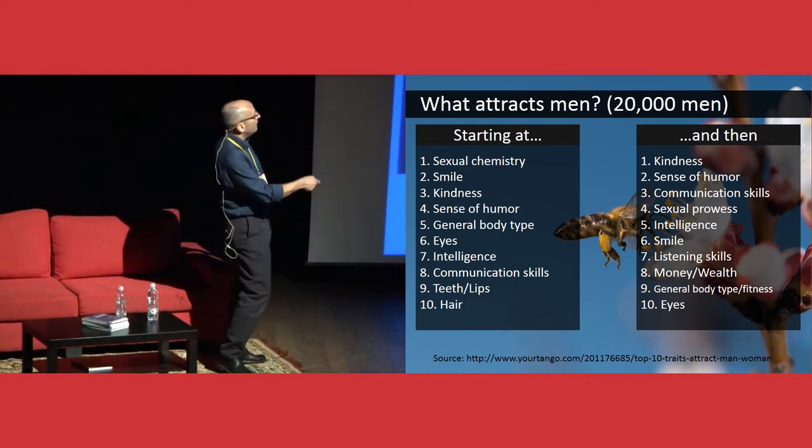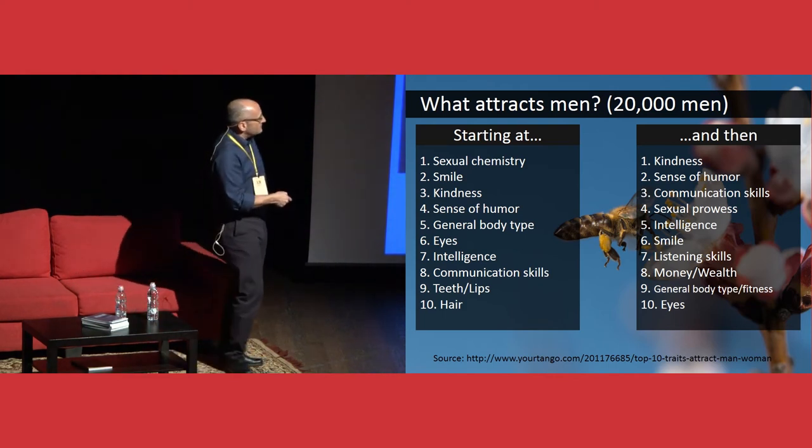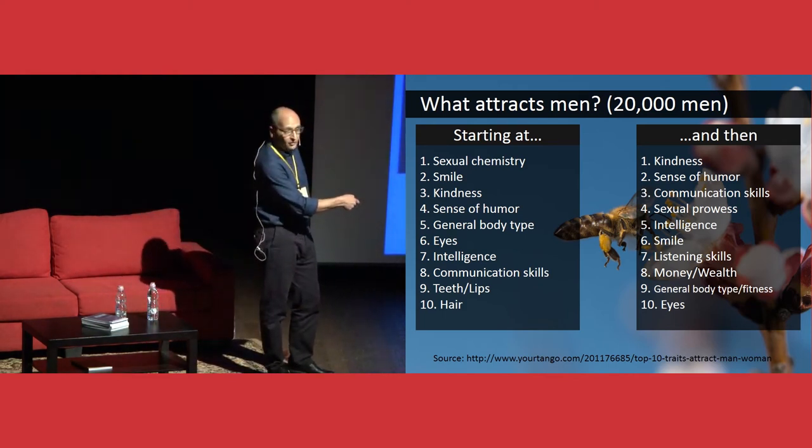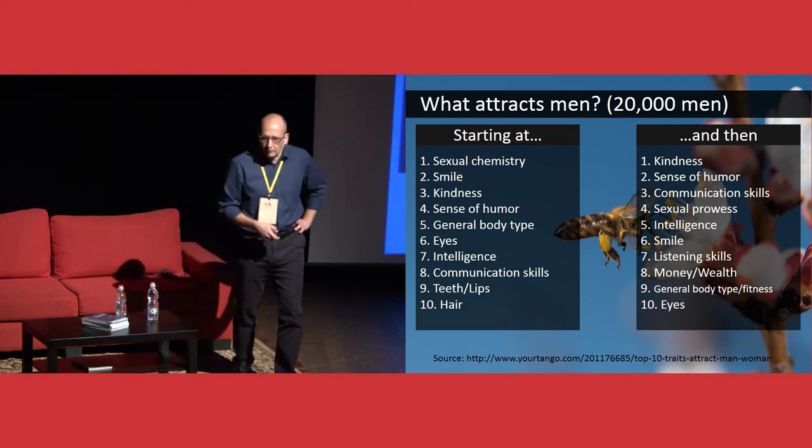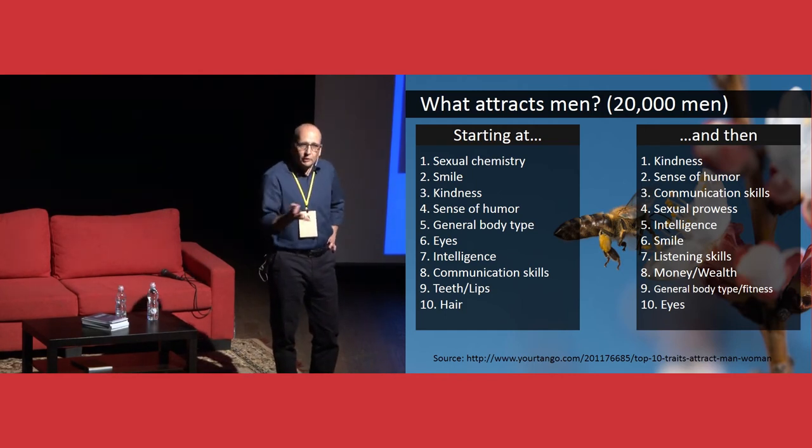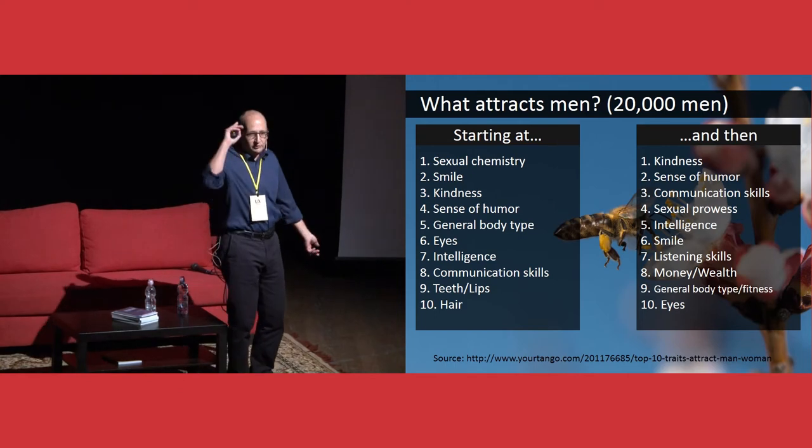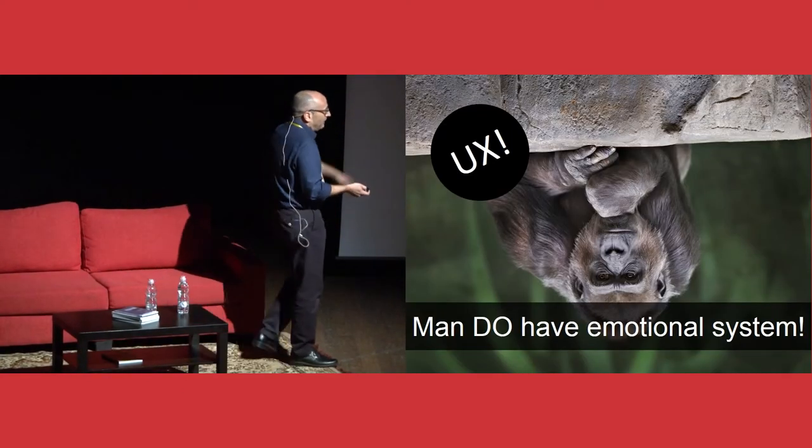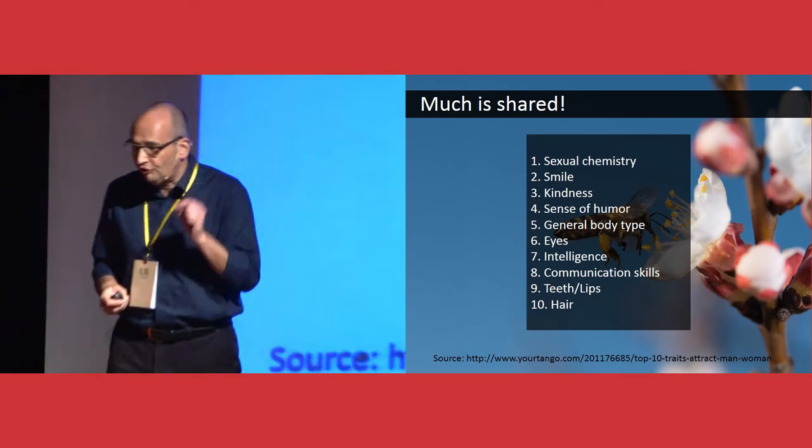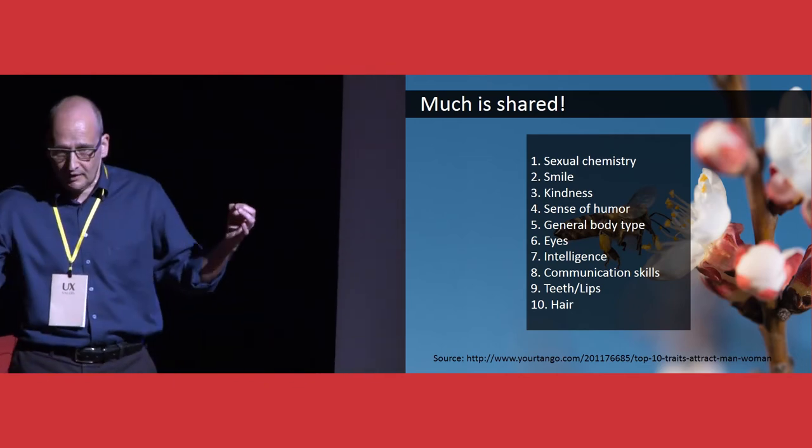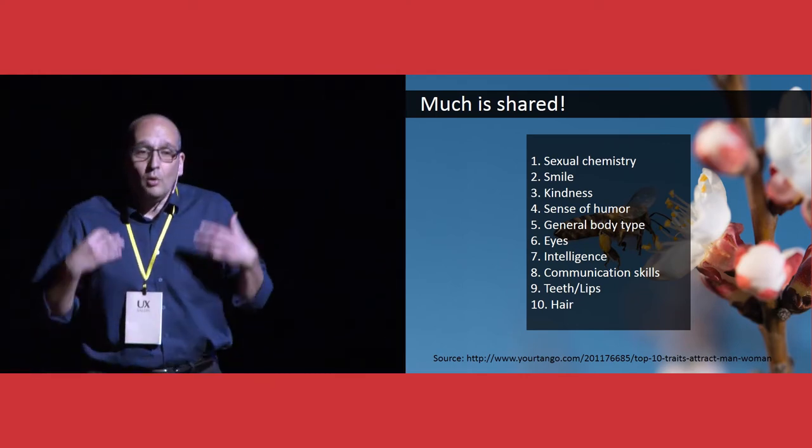Sexual chemistry drops from the first place to the fourth place. Then the smile drops from the second place to the sixth place. And then kindness goes from the third place to the first place. This proves that we are men, are all just little kids who want somebody to hug us. And then sense of humor to the second place. And later on, communication skills, going to the third place.